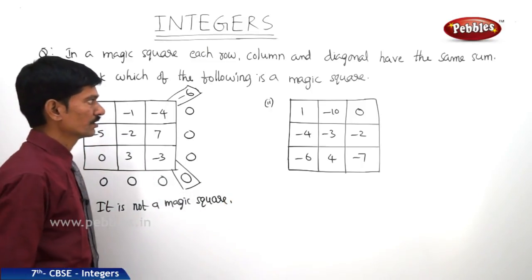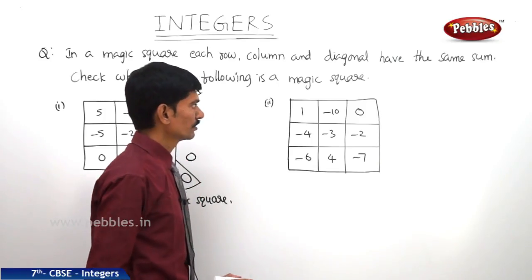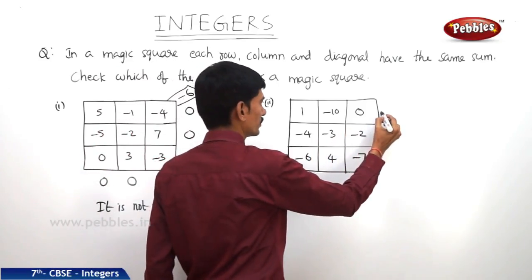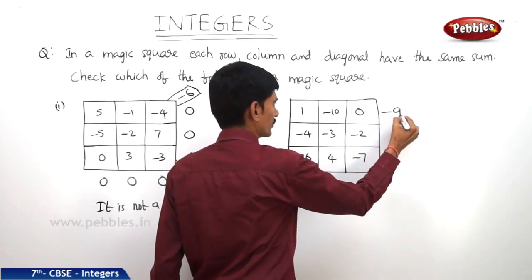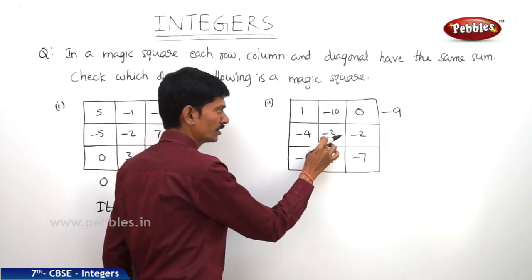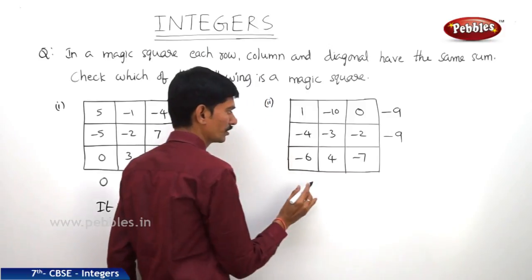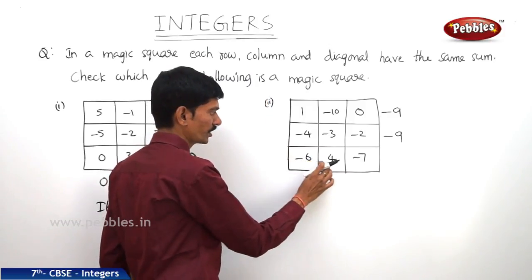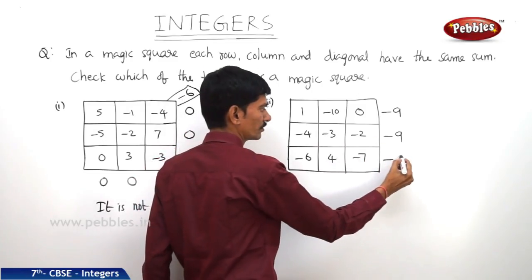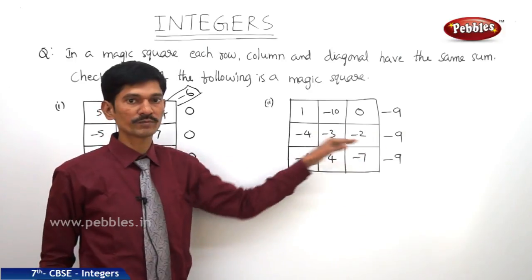Now let us see the second square. 1 minus 10 is minus 9. And in the second row, minus 4 minus 3 is minus 7, and minus 7 minus 2 is minus 9. And in the third row, minus 6 plus 4 is minus 2, and minus 2 minus 7 is minus 9. So in this square, we have got the same sum in each row.